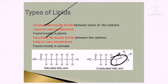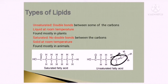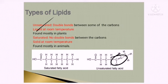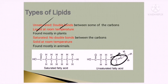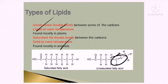When between the carbon atoms you can find a double bond (C=C), those are categorized as unsaturated fatty acids. Unsaturated fatty acids are liquid at room temperature and are mostly found in plants. Saturated fatty acids — like vanaspati, dalda, and ghee — are solid at room temperature and are mostly found in animals.